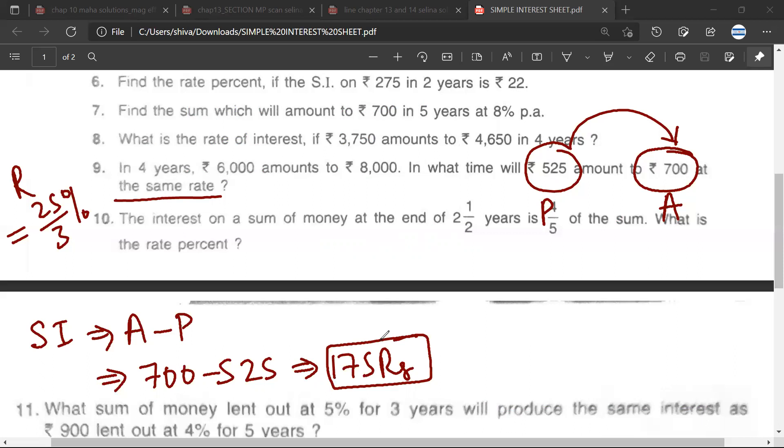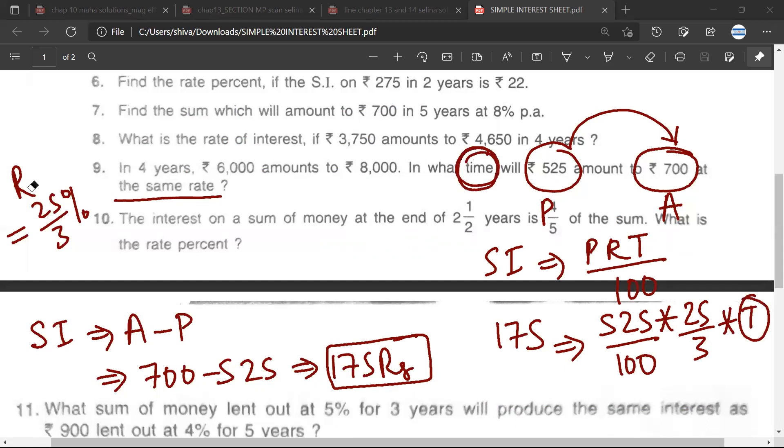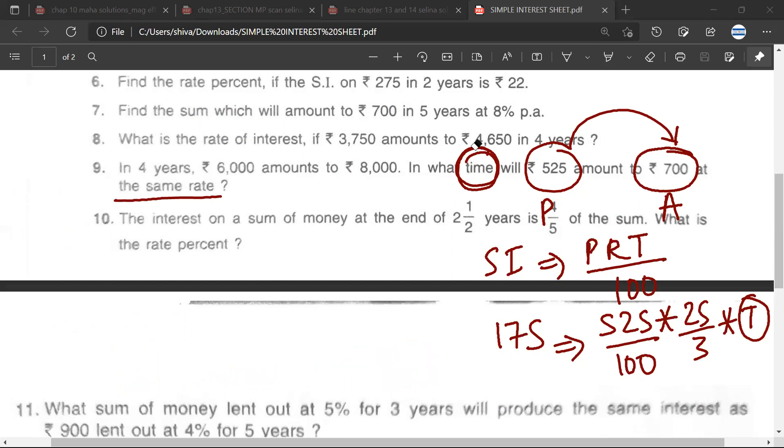Is it correct? Yes. Now again I'll apply the formula: simple interest equals PRT by 100. The interest is 175, the principle is 525, the rate is 25 by 3 percent. I have to find the time. Is it correct? Yes. You'll have to do the calculation to find the time. Whatever is the time will be in years.